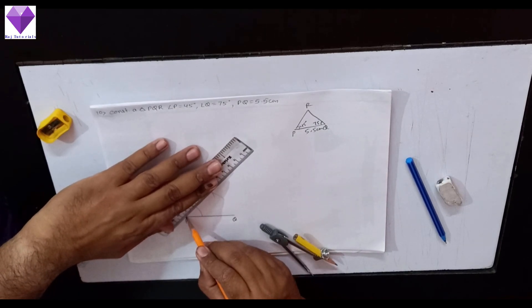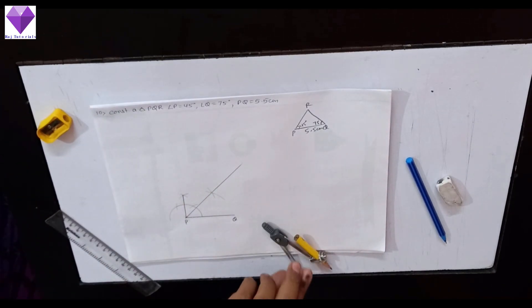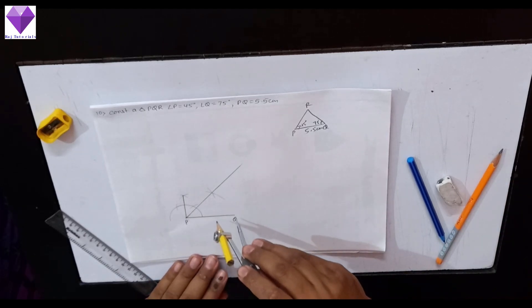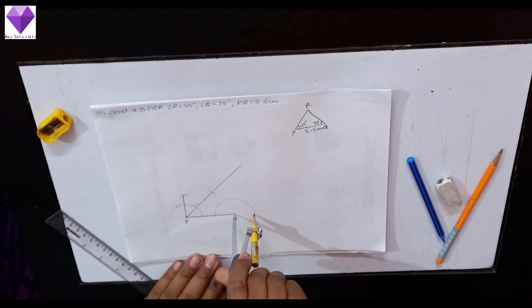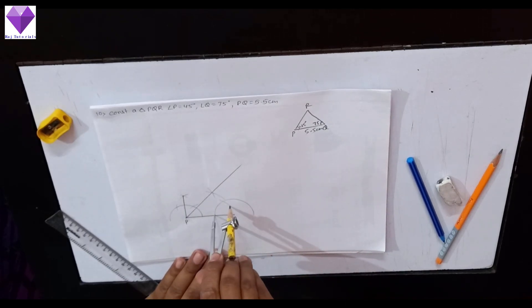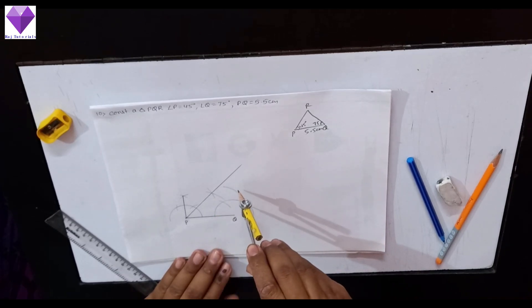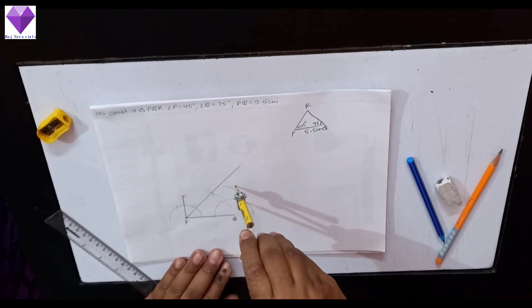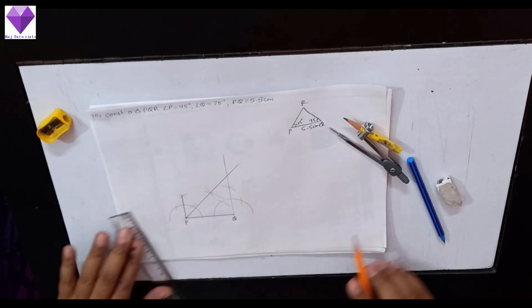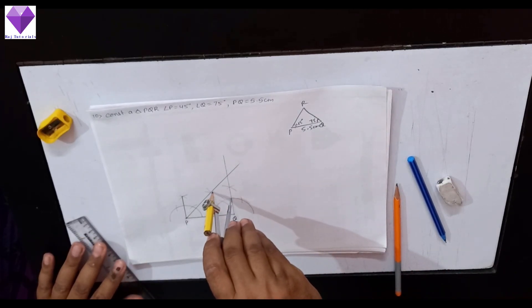Now I will elongate this. If I bisect 60 and 90, I get 75 degrees. So to make 75 degrees, I am again drawing here an angle of any measurement, a semicircle, and with this as center I will make 60 and 120 degrees. Now I will bisect 60 and 120 to get 90 degrees. I will join the Q point with the 90 degree angle. Now I have to bisect 60 and 90, so I am bisecting that too.